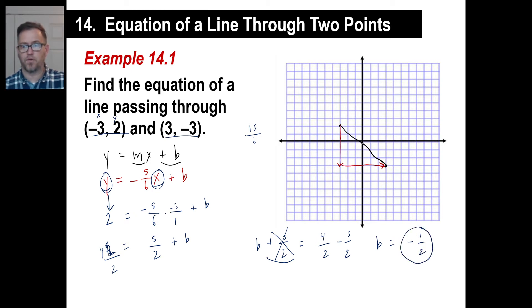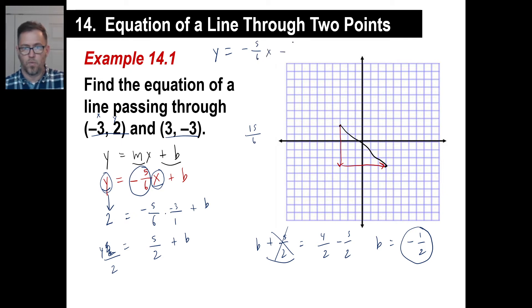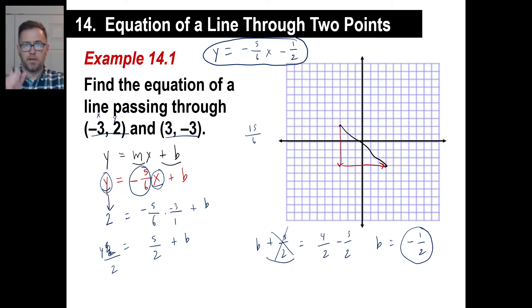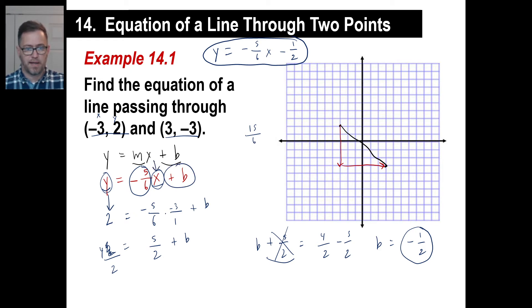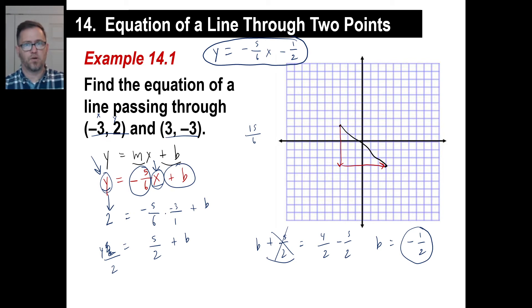That's reasonable — it's about right there on the graph. So that's it — we've got it. Our equation is y equals negative five over six x minus one half. When they say find the equation of a line, just go y equals mx plus b. Count the slope, figure out if it's negative or positive. Once you have that, find b by plugging in an x value and a y value from one of the given points and solving.